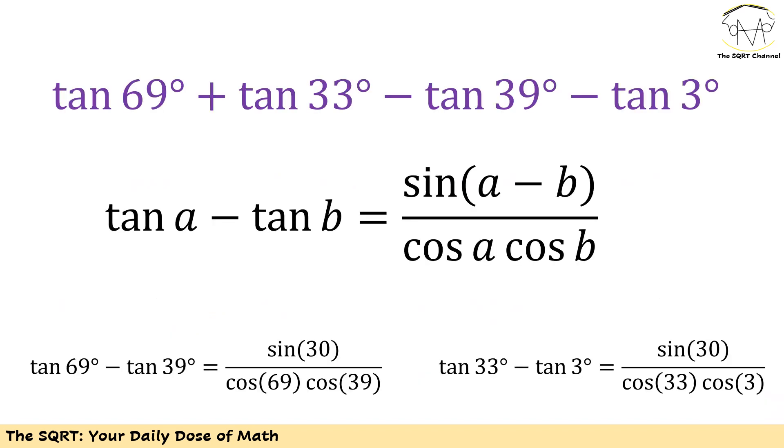Obviously when we have a problem like this we are going to benefit from a lot of different identities. Let's start with the first one. We have tan a - tan b, we can replace it with sin(a - b) over cos a times cos b. You can verify this identity by just replacing values that we have for tan and then you will see what you need to see. The tricky part here is using 69 and 39 together and 33 and 3 together.